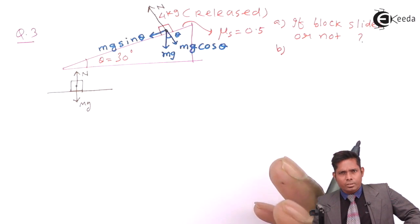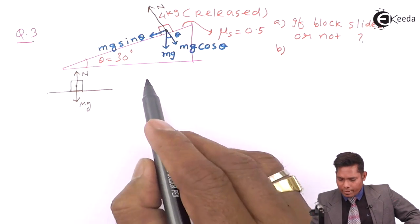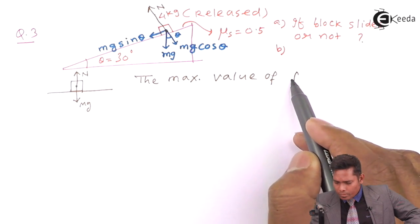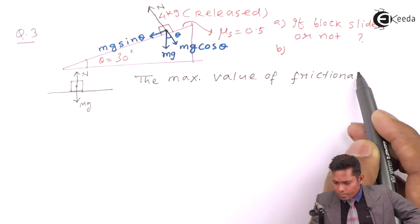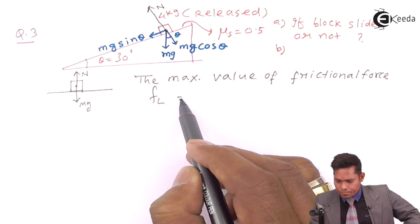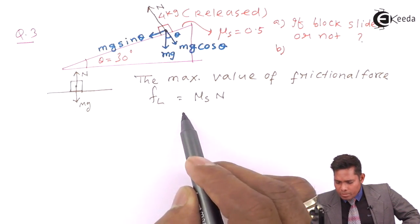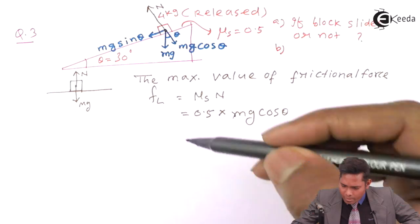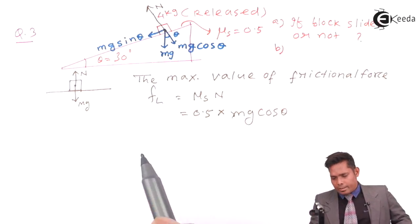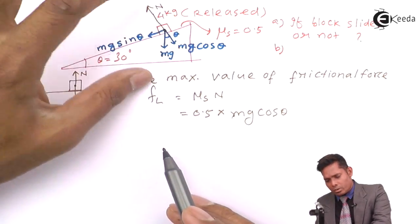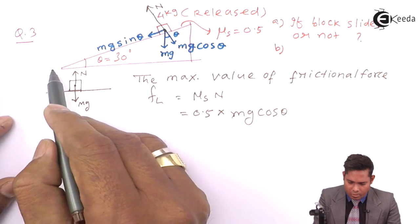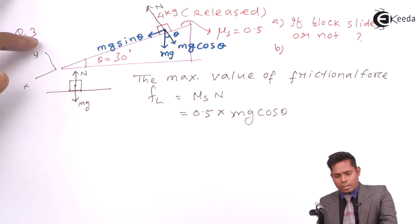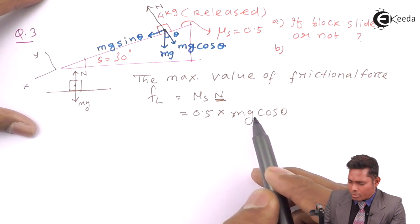Now we have to find the maximum value of frictional force, that is FL, the limiting friction. FL equals mu_s times N. What is mu_s? It is 0.5 as given. What is N? N equals mg cos theta. Because when the block slides or doesn't slide, there is no movement perpendicular to the surface — in the y-direction. So the two forces in that direction must be equal, and therefore N equals mg cos theta.